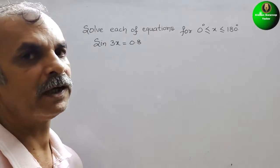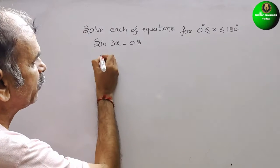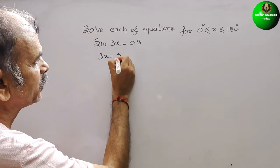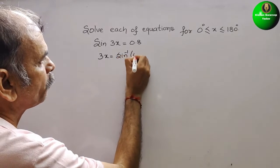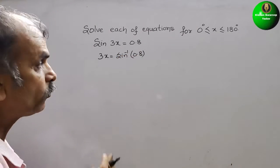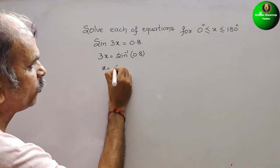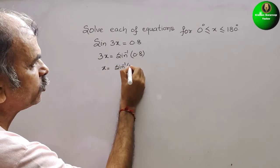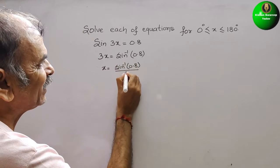First, we will convert sine to sine inverse. So it will come as: 3x = sin⁻¹(0.8). Therefore, x = sin⁻¹(0.8) divided by 3.